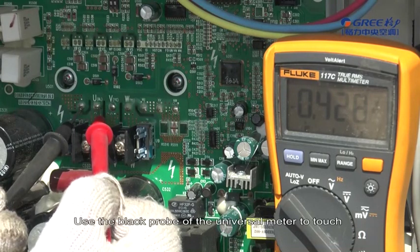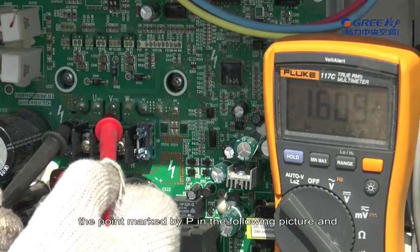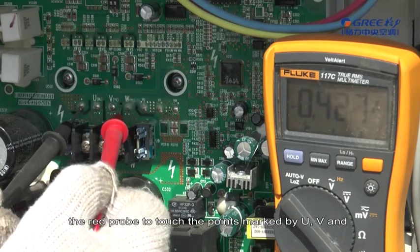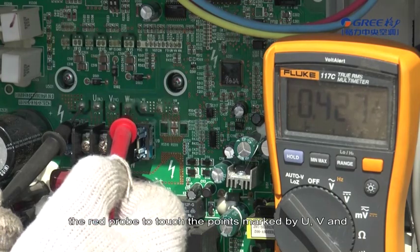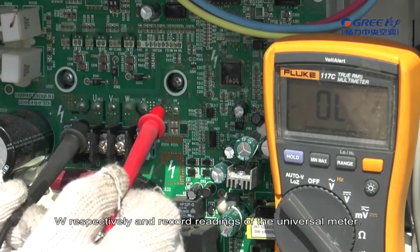Detection Method. Use the black probe of the universal meter to touch the point marked by P in the following picture and the red probe to touch the point marked by U, V, and W respectively. Record readings of the universal meter.